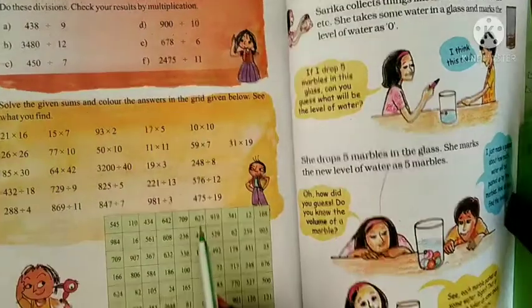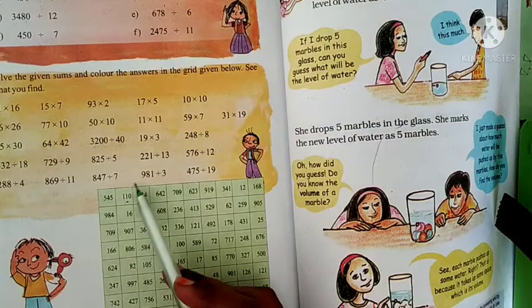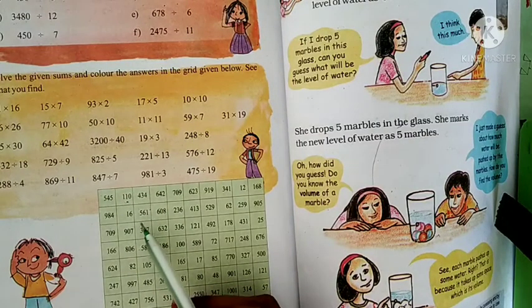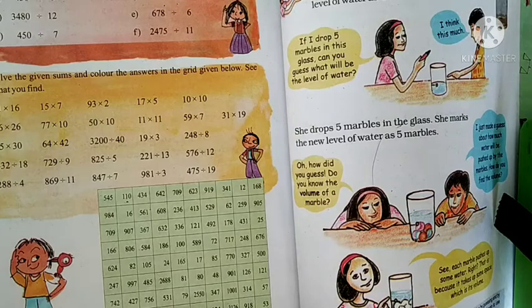So this is the answer. Here in this box will be 136. You have to color this. If you have any doubt, you can ask me. Thank you.